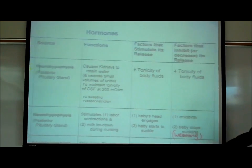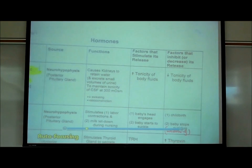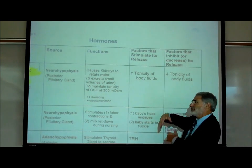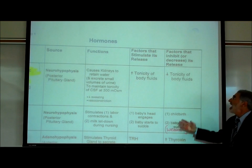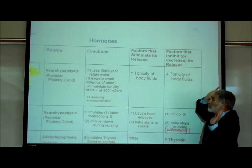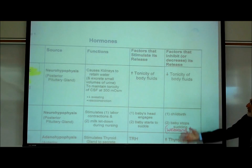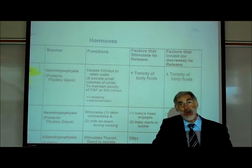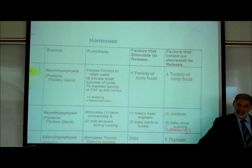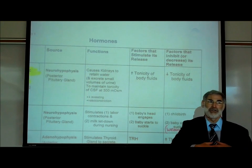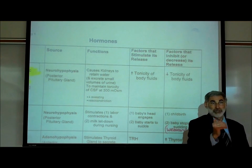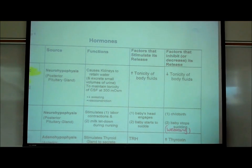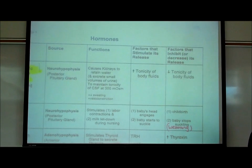What factors stimulate the release of ADH? Increased tonicity of our body fluids — we're too salty. What factors decrease its release? The opposite: if our tonicity is too low — we're hypotonic. The amount of ADH released depends on whether you're hypotonic or hypertonic, and the idea is to release whatever amount is needed to get you back to isotonic, adjusting how much water you pee out.